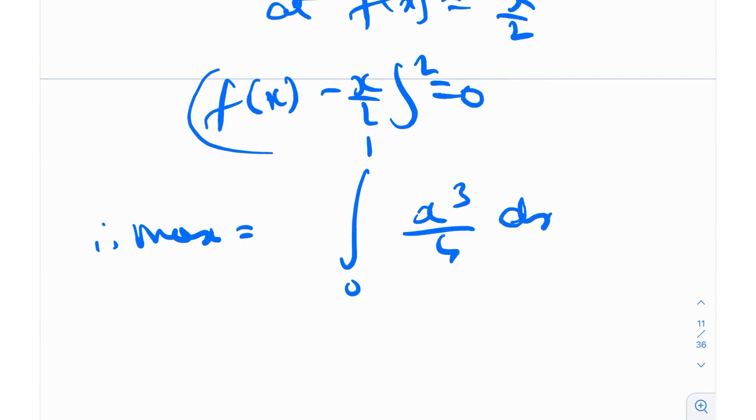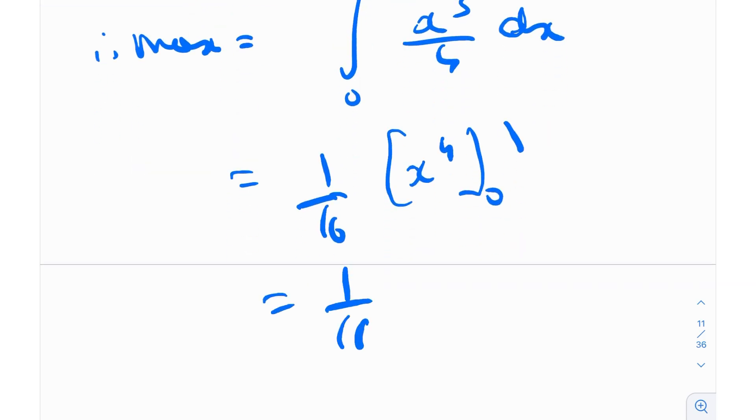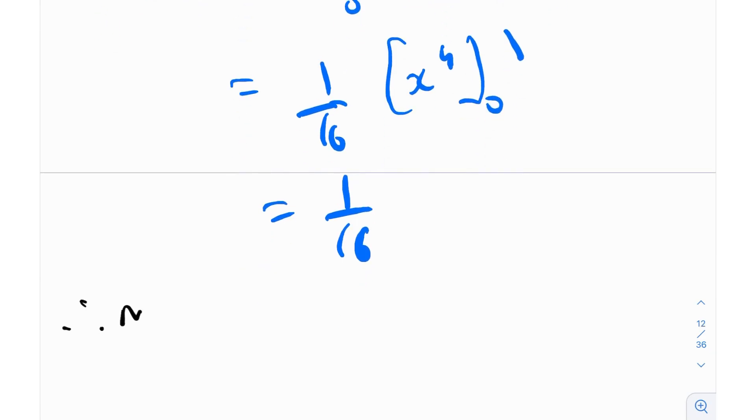And this is obviously just simple, which is 1/16 · x⁴ from 0 to 1, which is 1/16. And that's the answer actually. Therefore, maxima is 1/16 at f(x) = x/2. And we can actually put this value of x/2 back in the original integral and then see that this actually holds true.